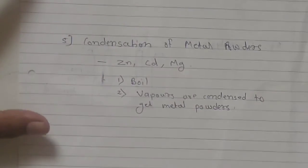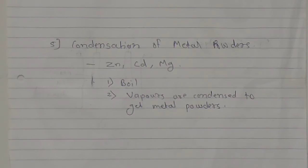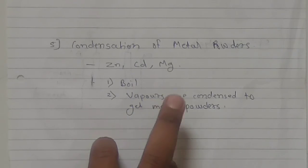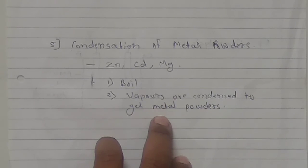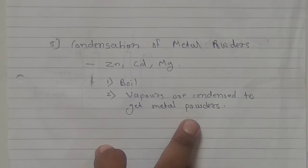The next method is condensation of metal powders. This method is mostly used for zinc, cadmium, and magnesium. In this case, you have to first boil the metal, then condense the vapors of the boiled metals. After condensing these vapors, they get converted into small particles, which are the metal powders. In this way, you get metal powders by condensation.